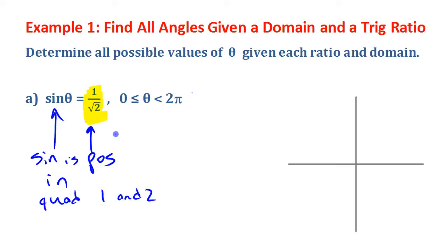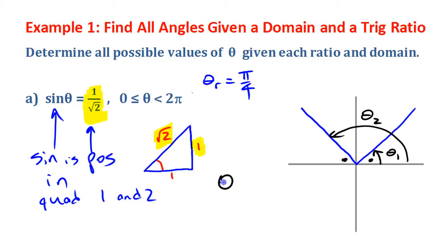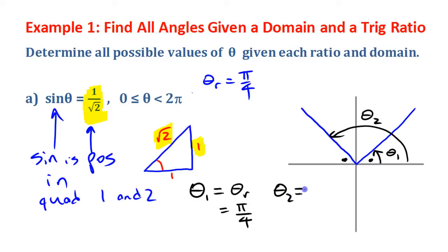Before drawing the angle, let's think about this ratio. 1 over root 2 comes from the special triangle that is 1, 1, root 2. Looking at the pi/4 angle, the opposite over hypotenuse gives 1 over root 2. So the reference angle is π/4. We'll draw 45 degrees (π/4), giving us theta one and theta two. Theta one is the reference angle π/4, and theta two is π minus the reference angle, which is 3π/4.